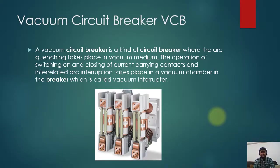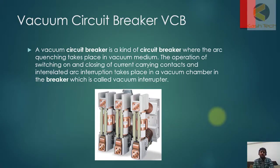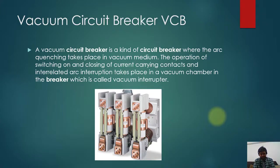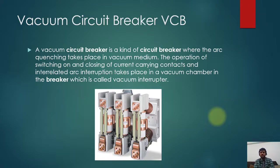Welcome. Our next topic is vacuum circuit breaker, which in short is called VCB. A vacuum circuit breaker is a kind of circuit breaker where the arc quenching takes place in a vacuum medium. The operation of switching on and closing of current-carrying contacts and the interrelated arc interruption take place in a vacuum chamber in the breaker, which is called a vacuum interrupter. This is one of the very important parts of switchgear.